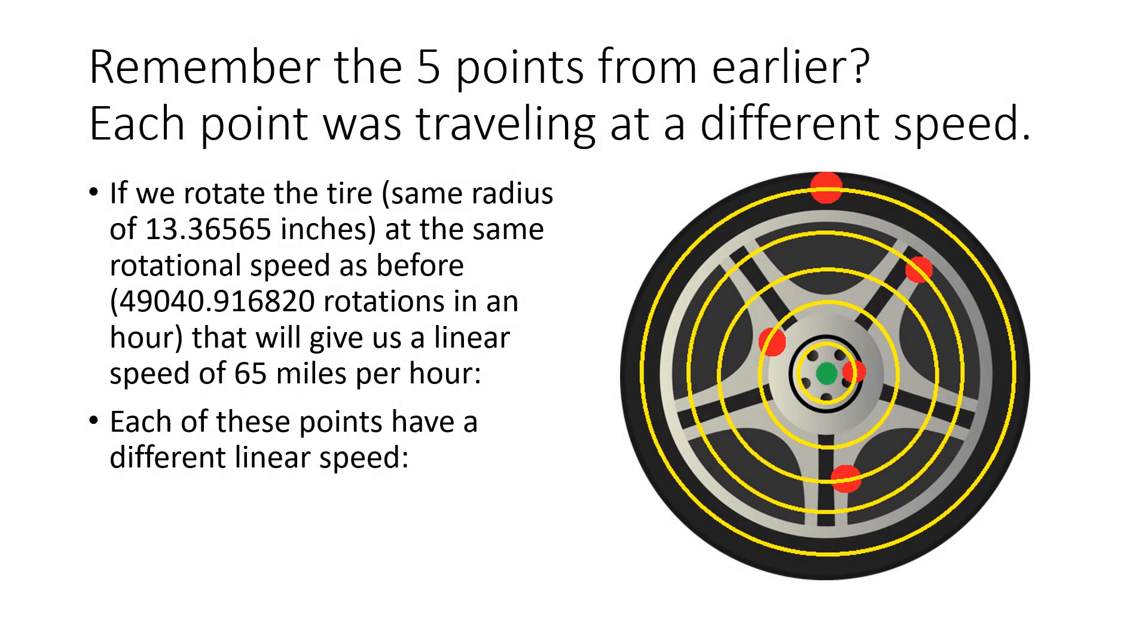Remember the five points from earlier? Each point was traveling at a different speed. If we rotate the tire, same radius of 13.36565 inches, at the same rotational speed as before, 49,040.916820 rotations in an hour, that will give us a linear speed of 65 miles per hour.